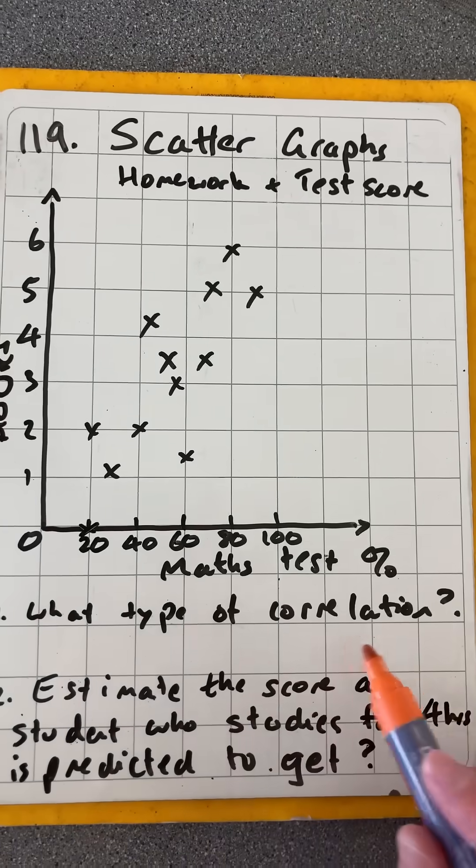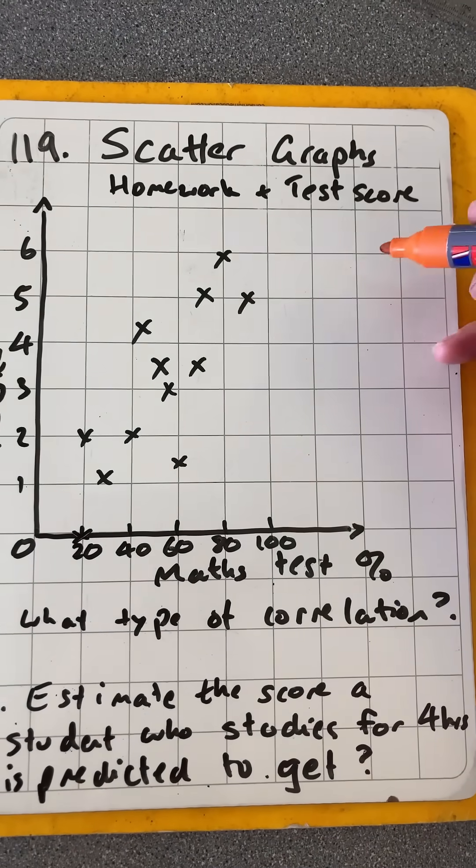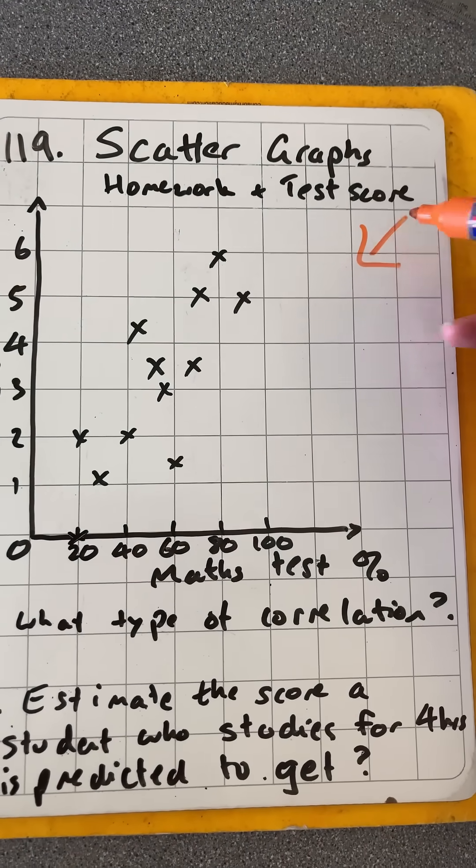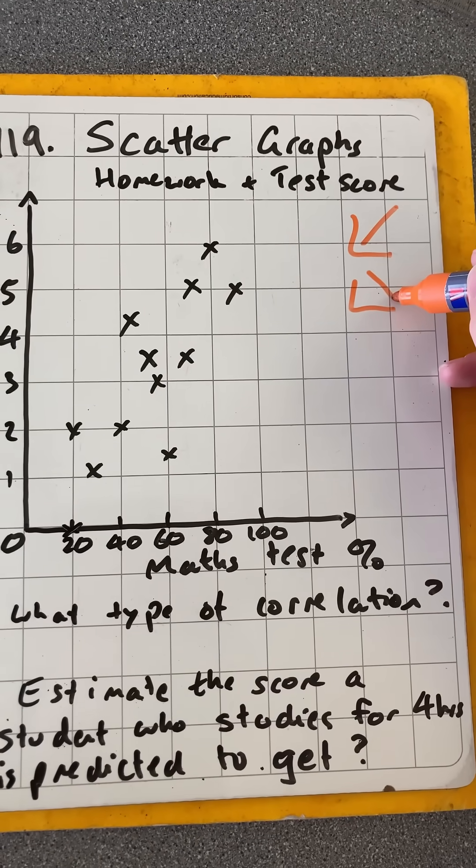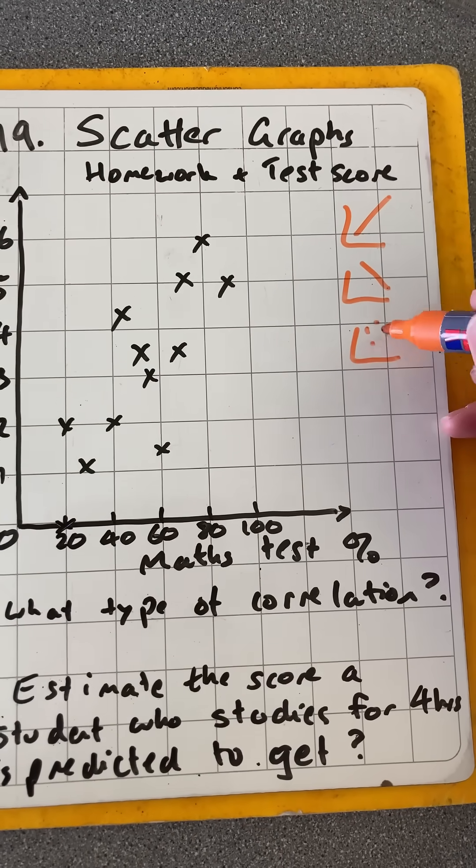Okay, the first question is what type of correlation? Remember there are only three types of correlation, an upward sloping positive, down sloping negative, and then no correlation.